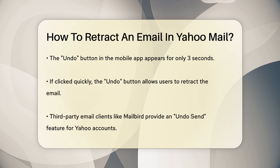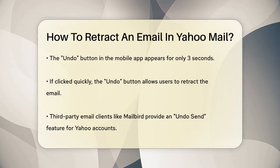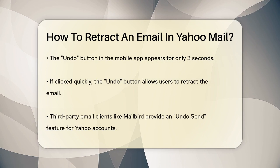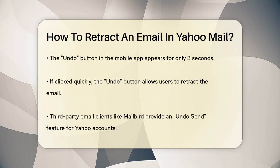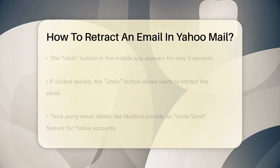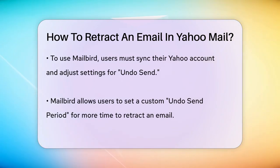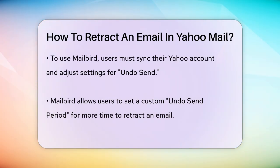Another option is to use a third-party email client like Mailbird. Mailbird allows you to sync your Yahoo account and enables an undo send feature. To use this, you need to set up your Yahoo account in Mailbird, go to the Settings, select Composing, scroll to Sending, and set your desired undo send period. This way, you'll have a bit more time to unsend an email if you realize you made a mistake.